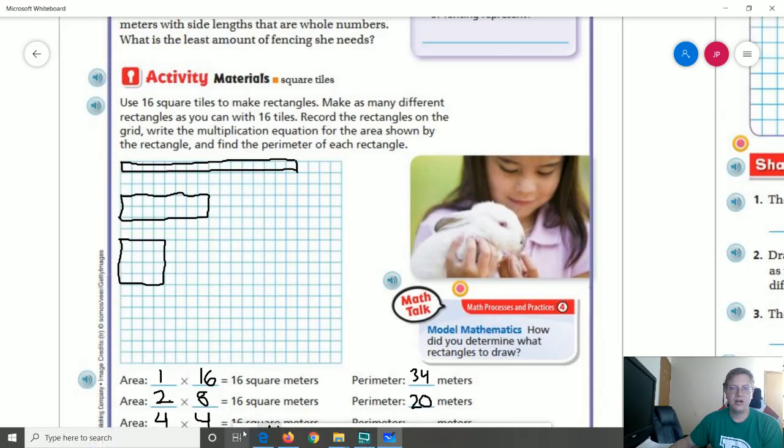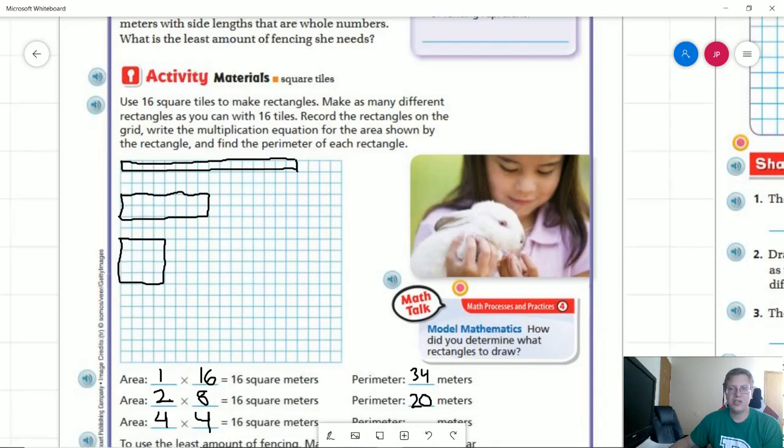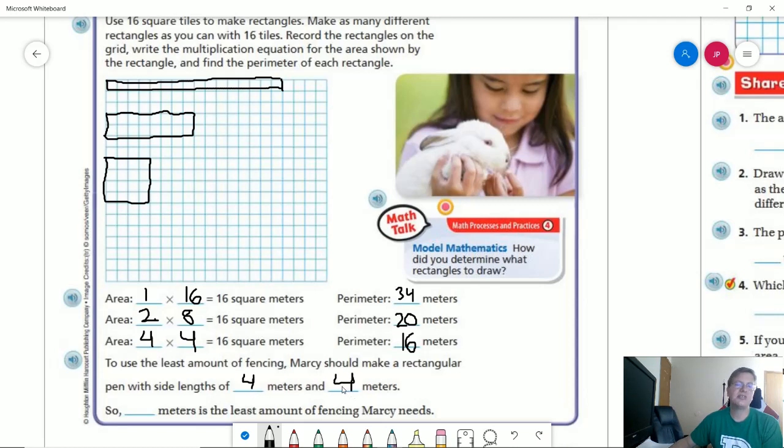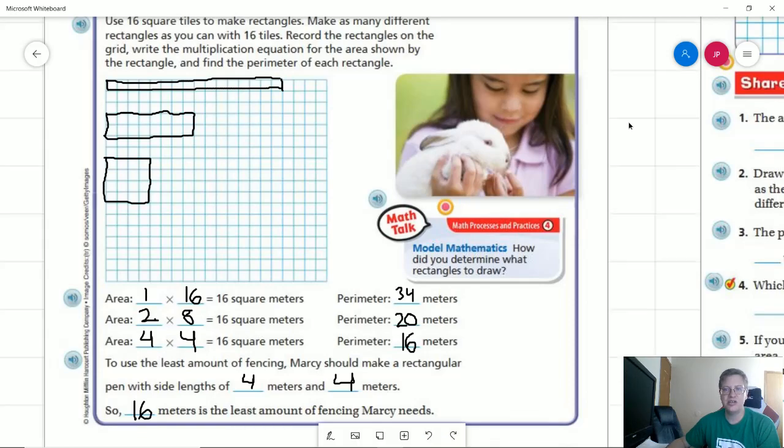And then for our last one we can do four plus four plus four plus four to also get 16. And so four meters and four meters would give us our side lengths for top and bottom and left and right for our rectangle, which is actually a square. And that means our perimeter would be 16. So to make the fence we would need 16 meters worth of material.